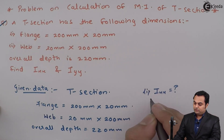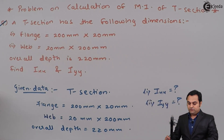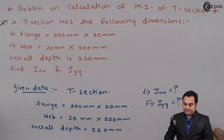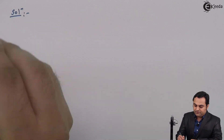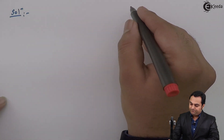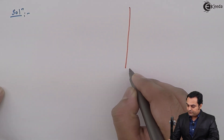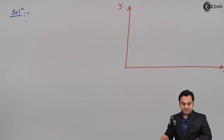Ixx is the moment of inertia about the XX axis, and Iyy is the moment of inertia about the YY axis. Now with the data available, let us find the solution. First, I'll draw the T-section with an x and y axis system.